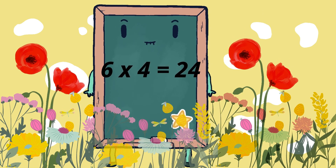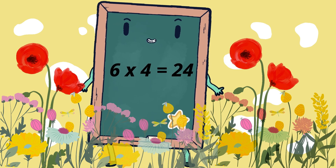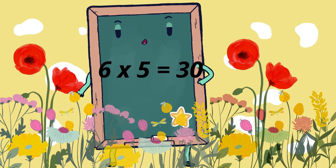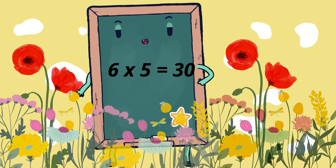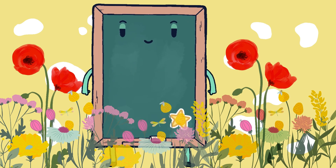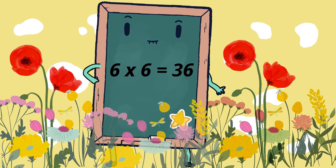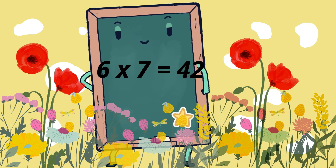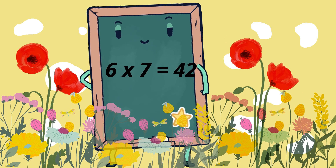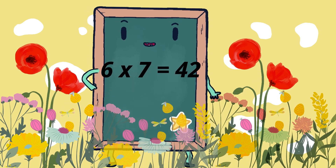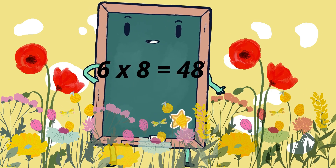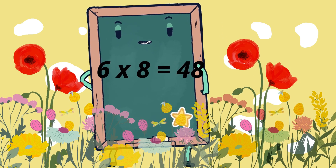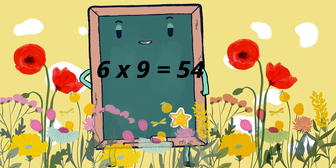6 4 is 24, 6 5 is 30, 6 6 is 36, 6 7 is 42, 6 8 is 48.